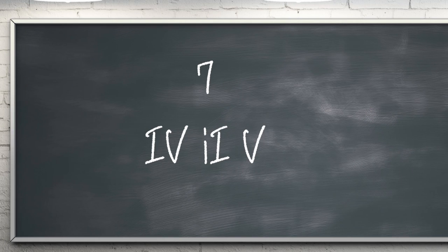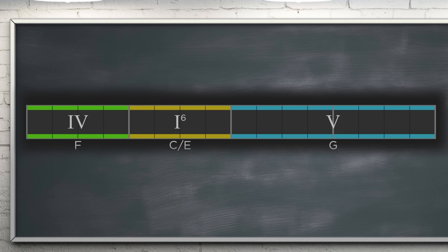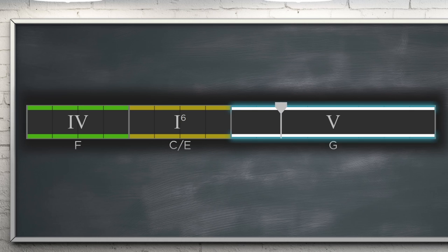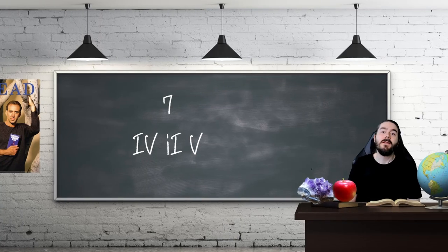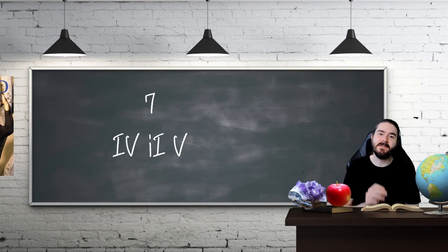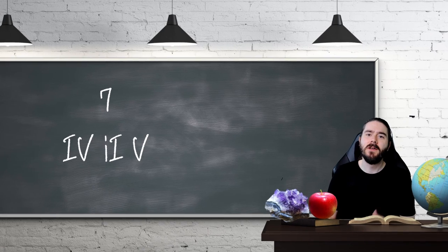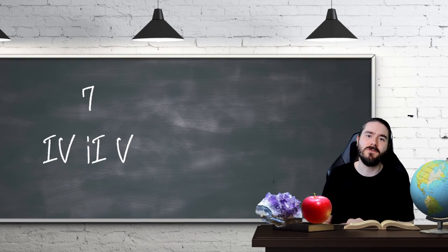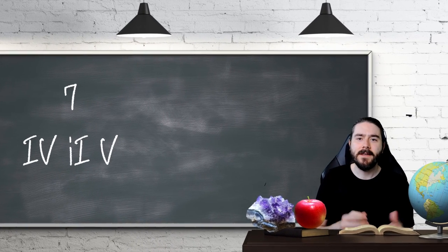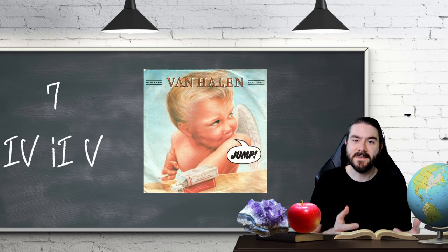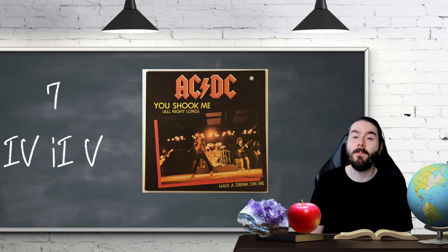Another three-chord progression at number 7: 4, 1st inversion 1, 5. This progression introduces a first inversion major chord. Standard major and minor triads have two inversions each, which provide an easy way to get more use out of basic progressions. They also allow you to create interesting bass lines. Examples include Jump by Van Halen and You Shook Me All Night Long by AC/DC.